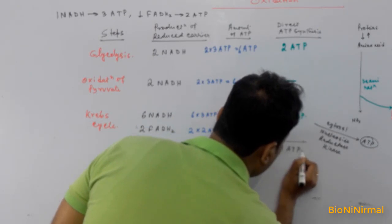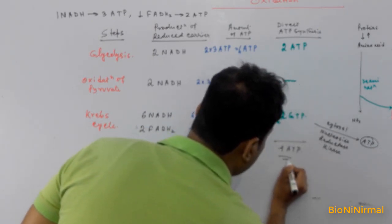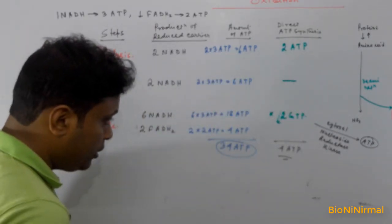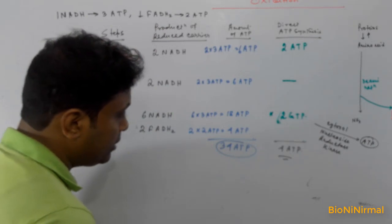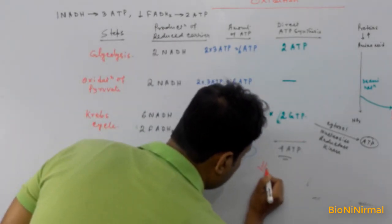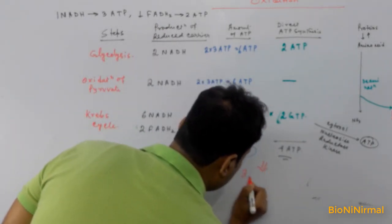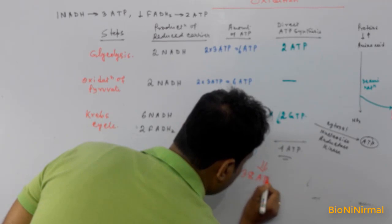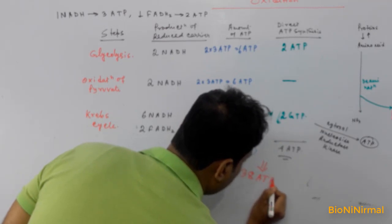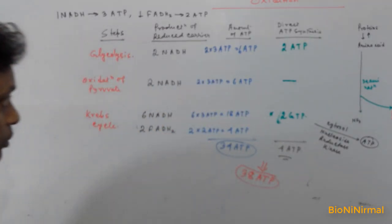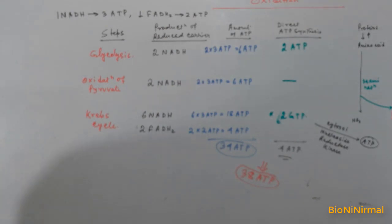So the total amount of ATP produced by glucose oxidation is 38 molecules of ATP from the oxidation of one molecule of glucose. This is the actual ATP calculation.